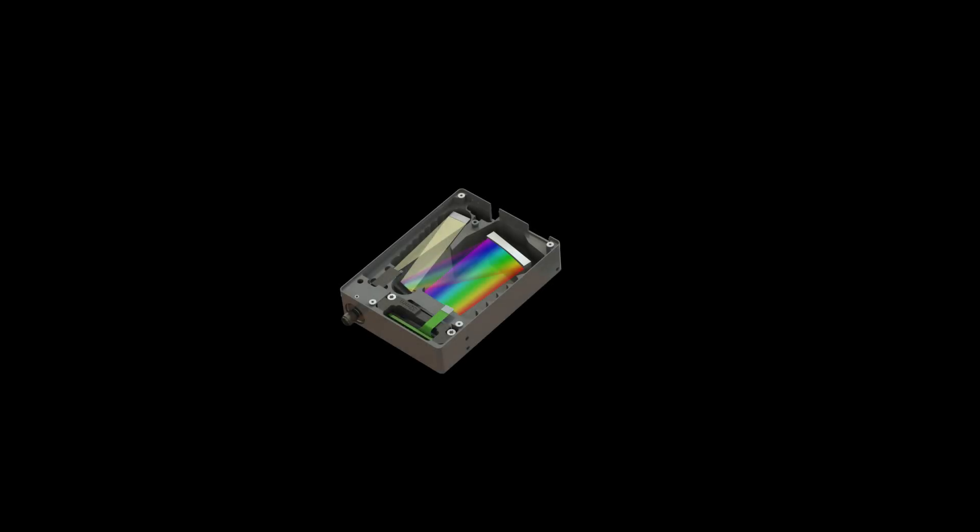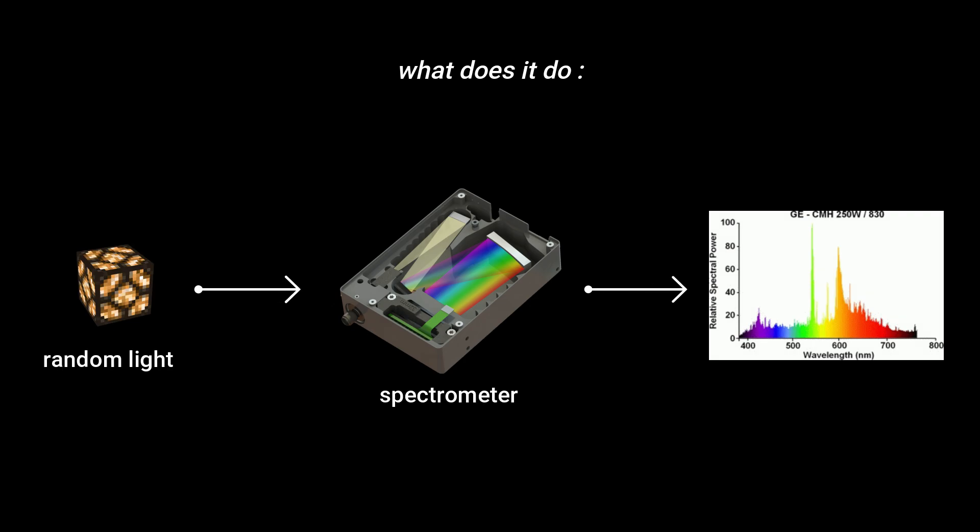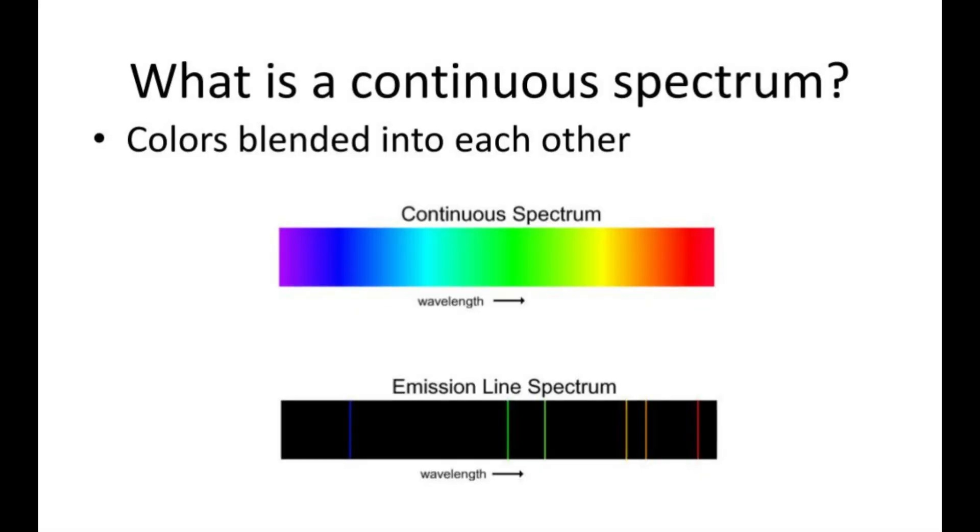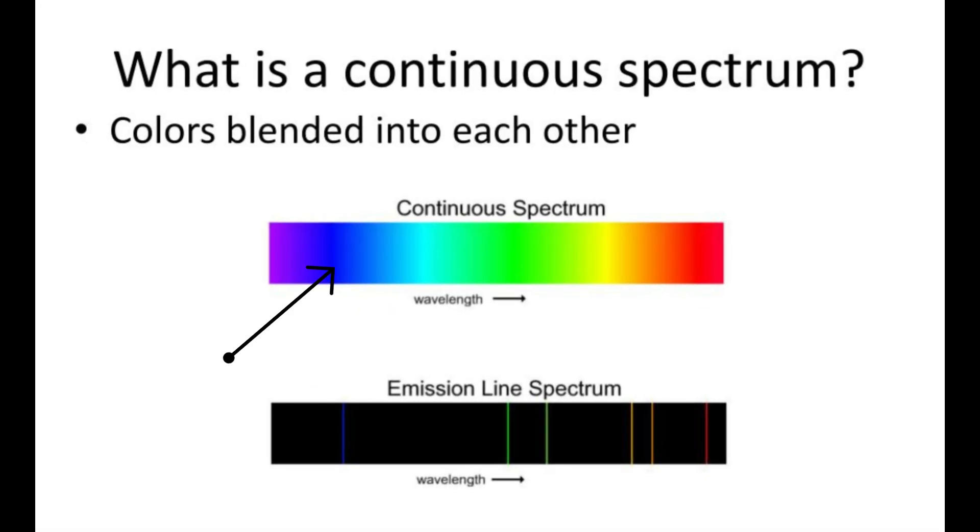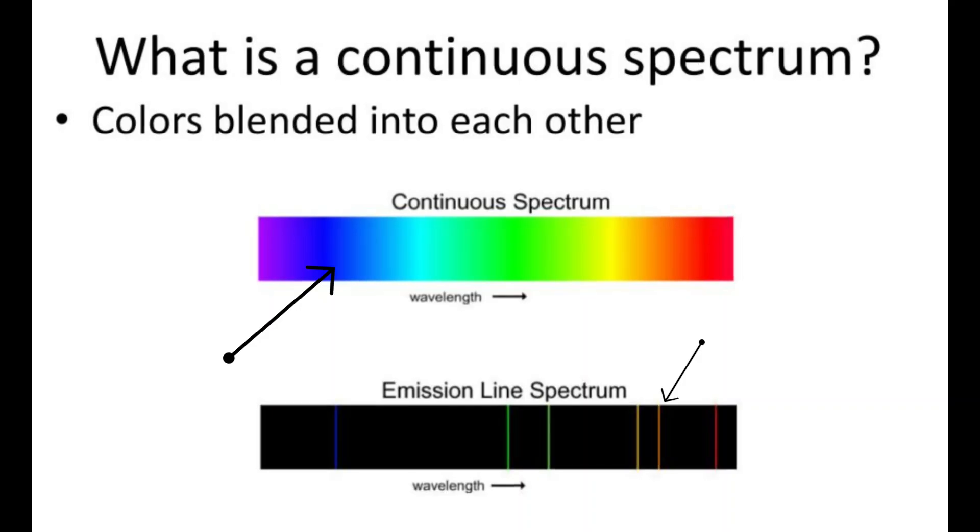If you don't know already, a spectrometer is a device that can analyze a given source of light and decompose it into its emission spectrum. That way you can get many information on the light, such as if it's a continuous spectrum, the wavelength of a monochromatic light, and more.